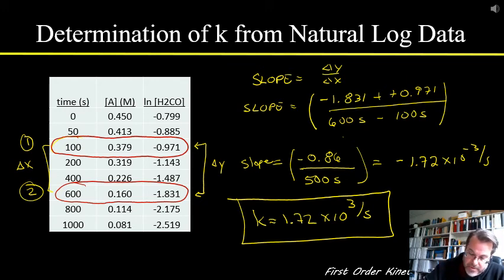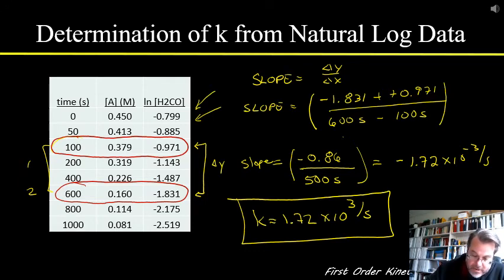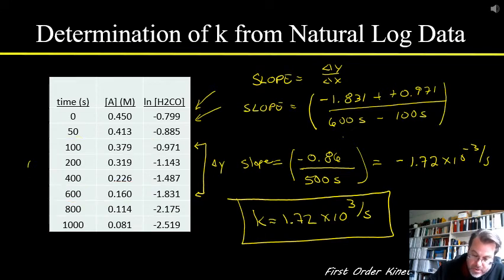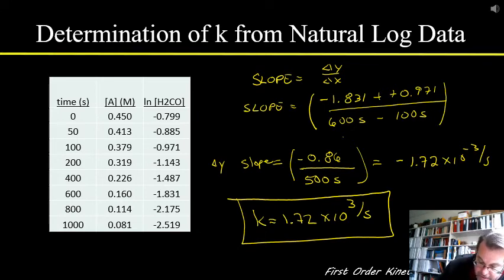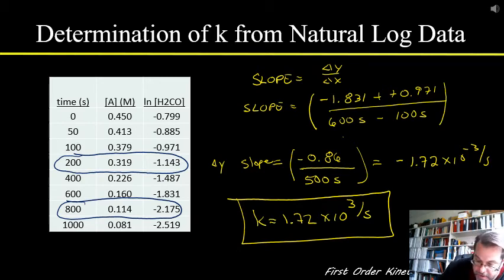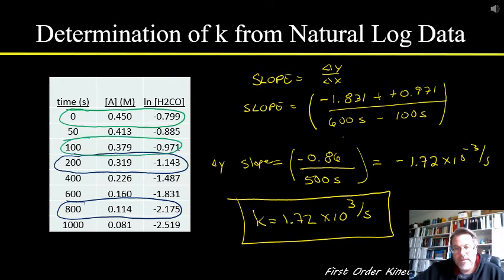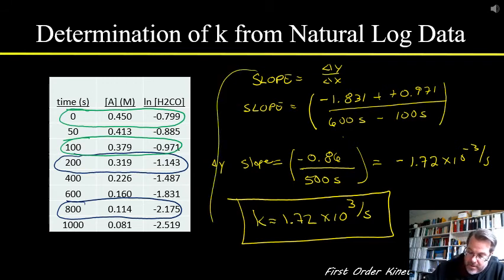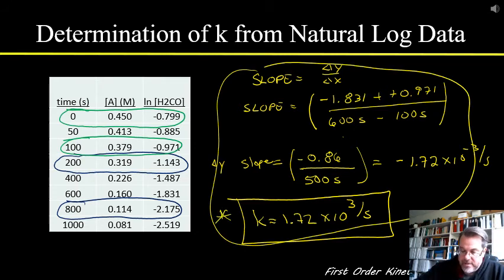Since k is a constant — and constants by definition are constant — you could get the same result by choosing any pair of points in this table. You might try this point and this point, or this point and this point. Go ahead and choose another data pair and try doing this calculation again to see if you get the same value for k. You should, and remember your units in the calculation.